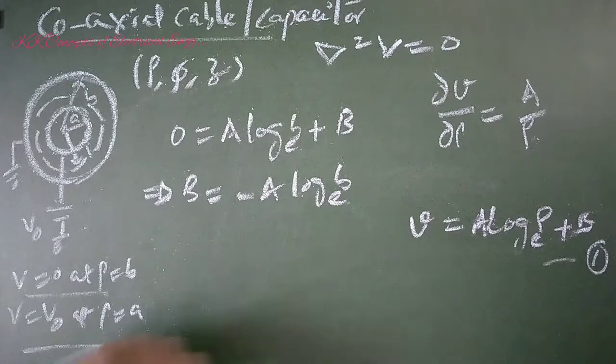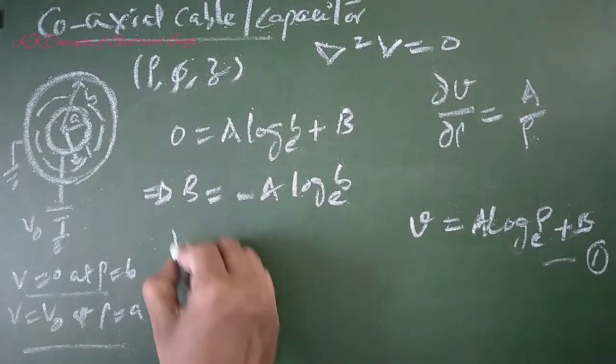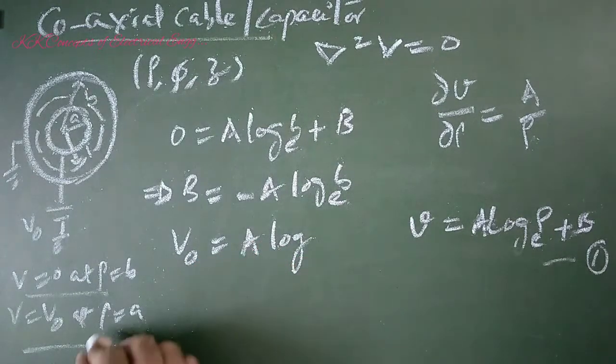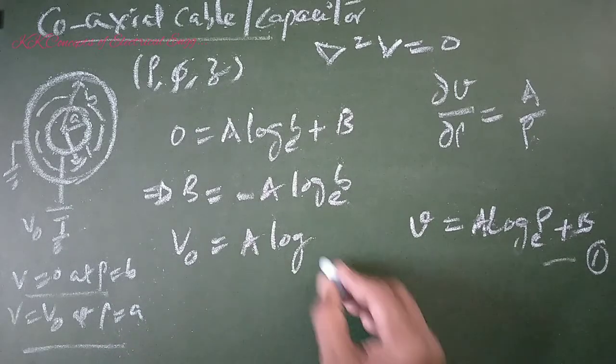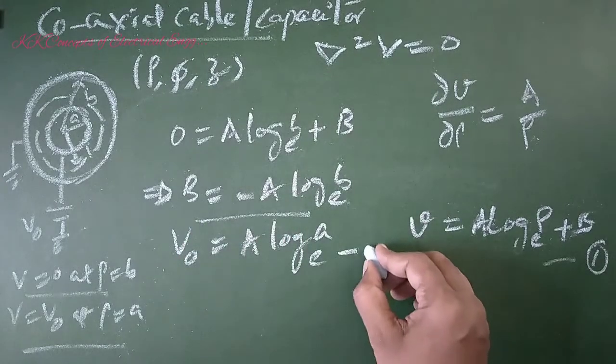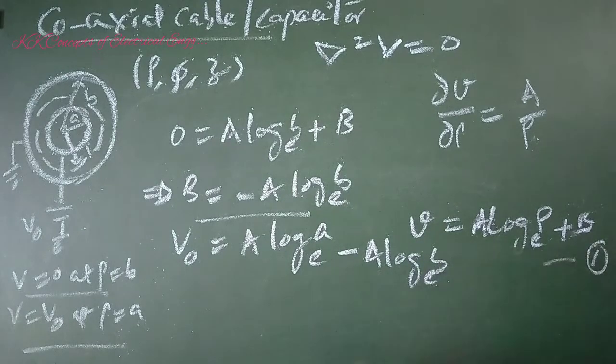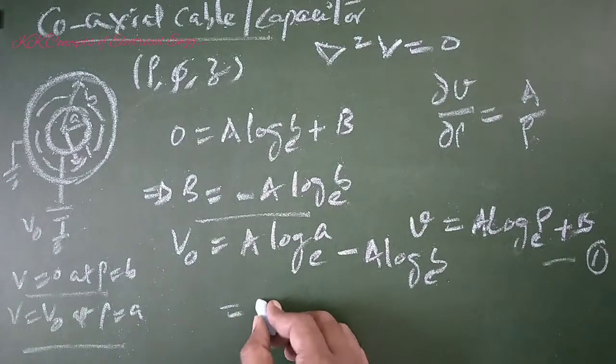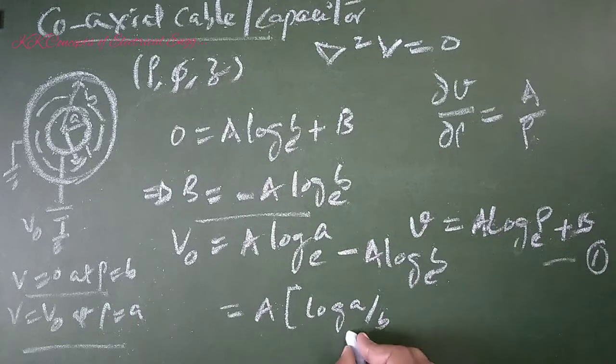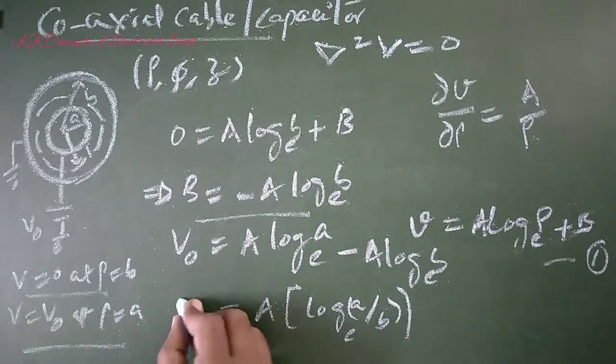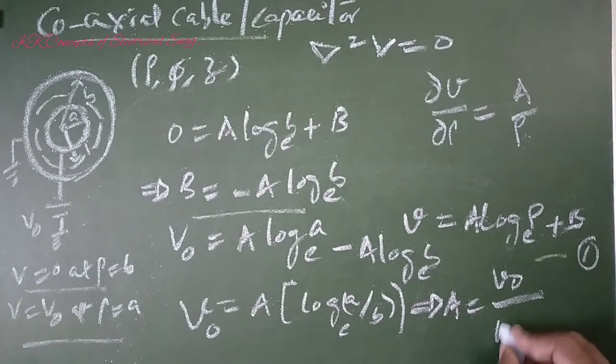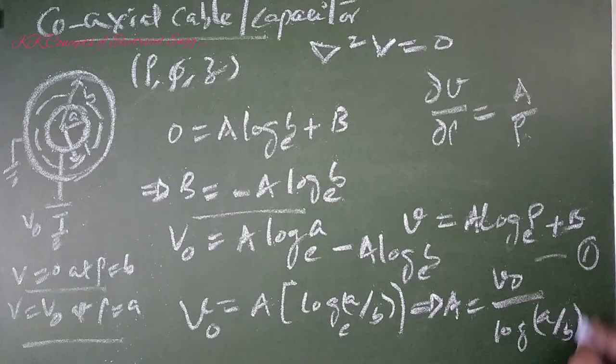Apply boundary condition number 2. Then V equals V₀ equals A log A minus B value, which we know. Substituting B value -A log B, we can take A common: log(A/B) equals V₀. Therefore A equals V₀ divided by log(A/B).